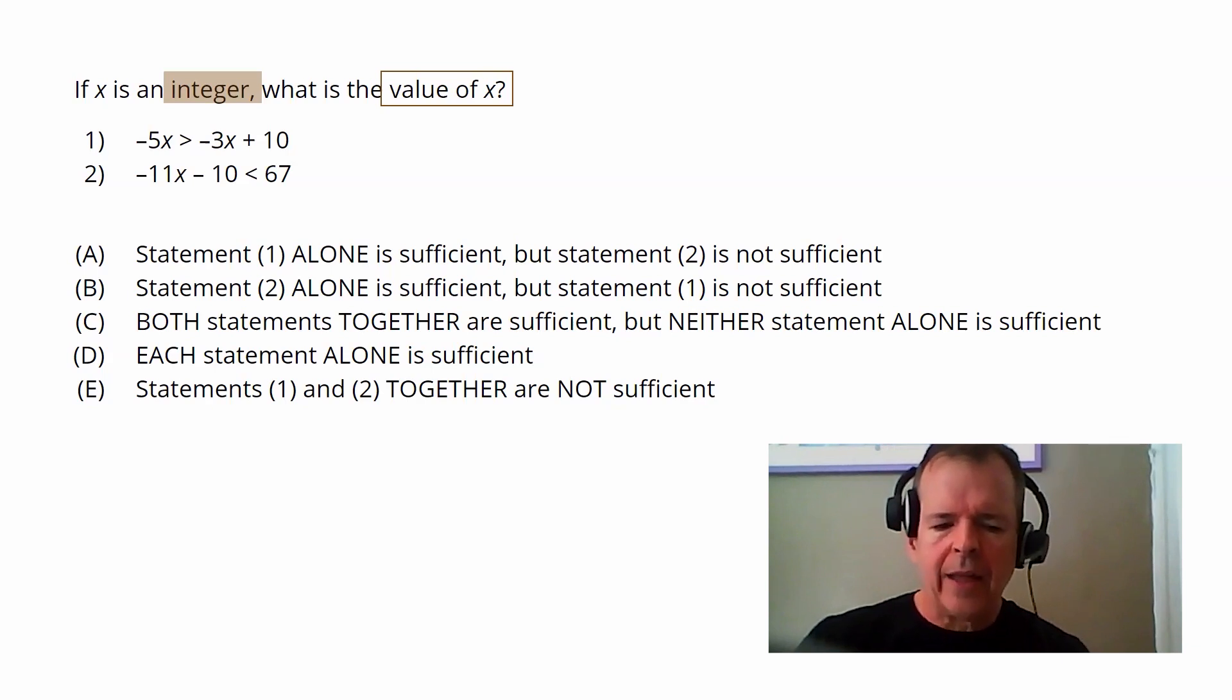And so bearing that in mind, when I look at statement one, I see an inequality and I only see X, which means I see X on both sides, but I'm going to look to combine that. And I see the same thing happening in statement two. So when I see an inequality and the X value, my instinct is that on their own, it's not going to be enough information